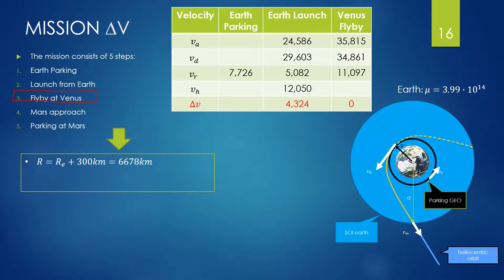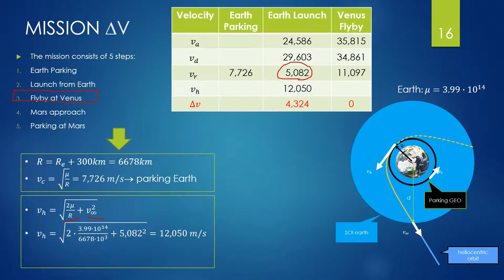The VC, the circular speed, is calculated by means of this formula. But to leave the sphere of influence of the Earth, we need a hyperbolic transfer. The required speed VH is calculated by means of this formula, where the first part under the root is the escape velocity and the second one is the relative speed of the elliptical transfer orbit. Finally, we get this value for the hyperbolic speed. Subtracting the circular orbit, we get the delta V which we need to apply in this position in order to enter the heliocentric elliptical orbit.